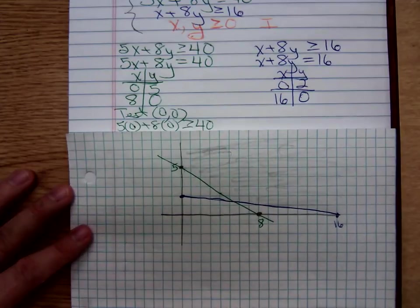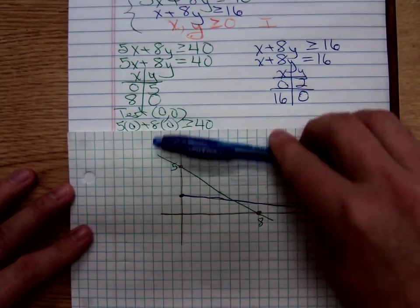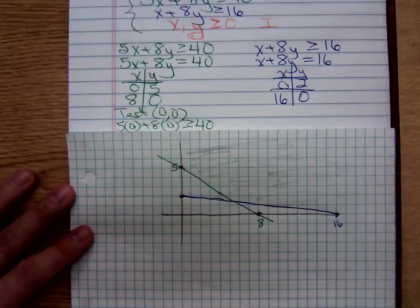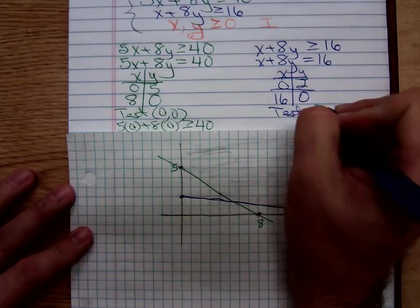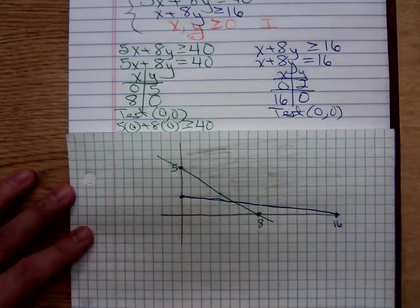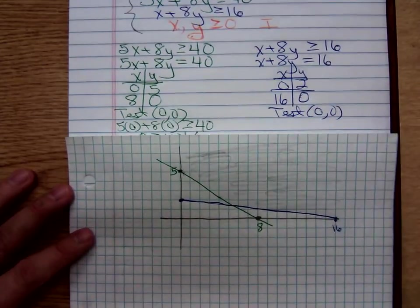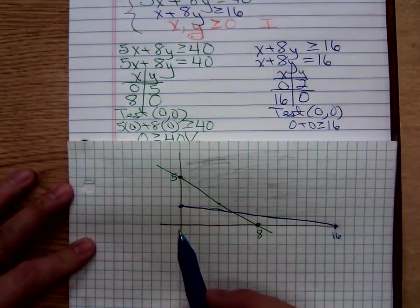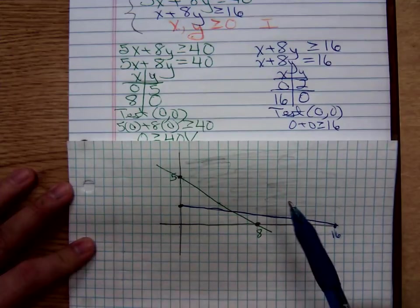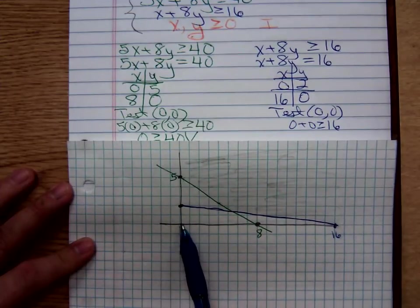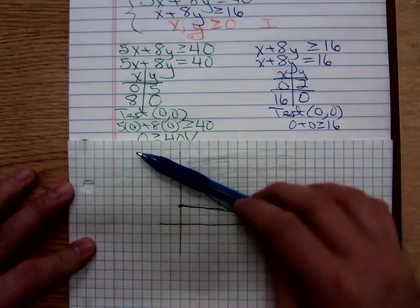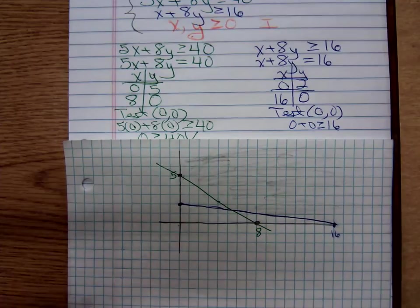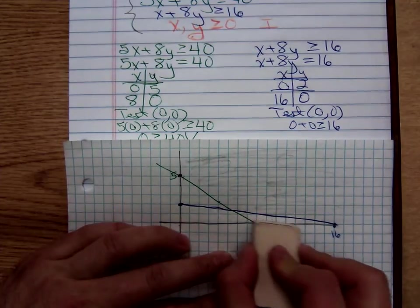We need to decide where we're going to shade. Are we going to shade above the blue line or below? To make that decision, what will we do? Testing 0, 0. Are we going to get a true statement or a false statement? We'll get 0 plus 0 is bigger than 16. False. So, we don't shade the side towards the origin. We shade away. This little triangular wedge now isn't going to be shaded.